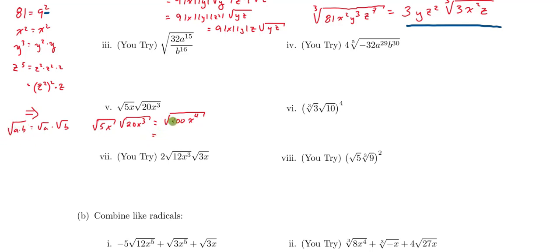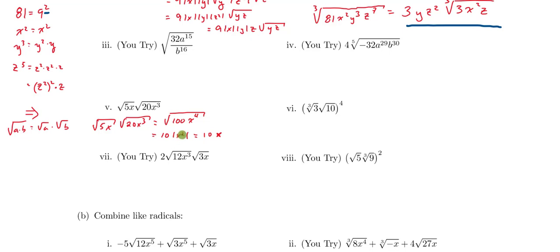Distributing the square root over the constant 100 and the variable x to the fourth: the square root of 100 gives me 10, and the square root of x to the fourth comes out as the absolute value of x squared. In this case, x squared is always going to be positive, so I can leave the absolute value off because this expression is always positive.